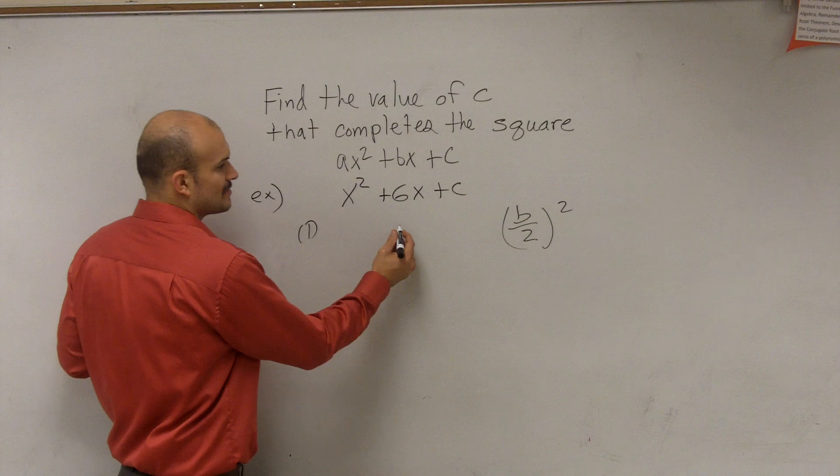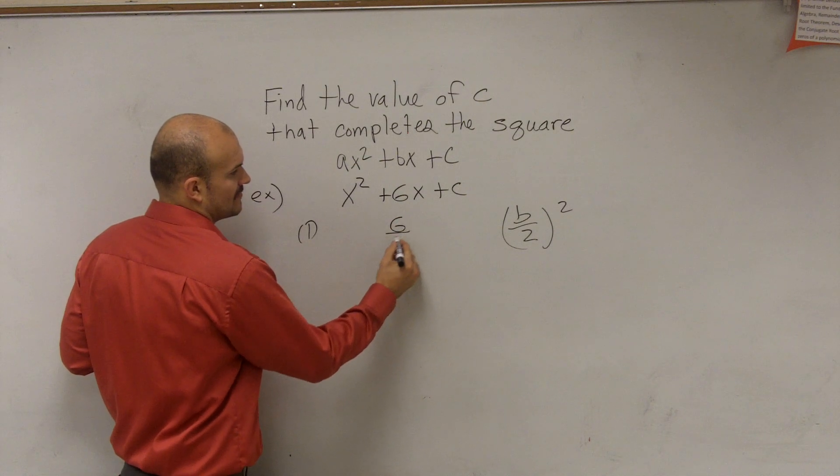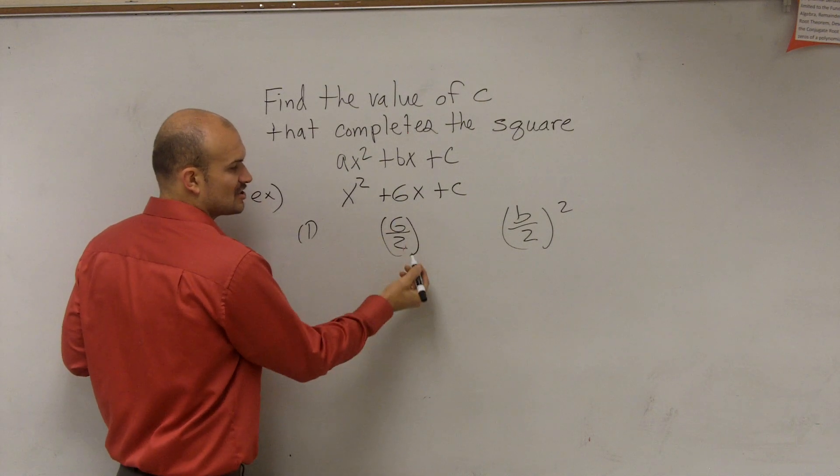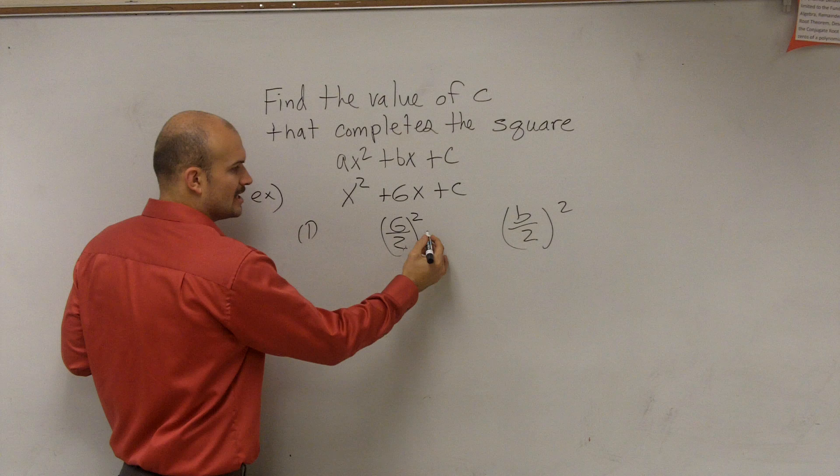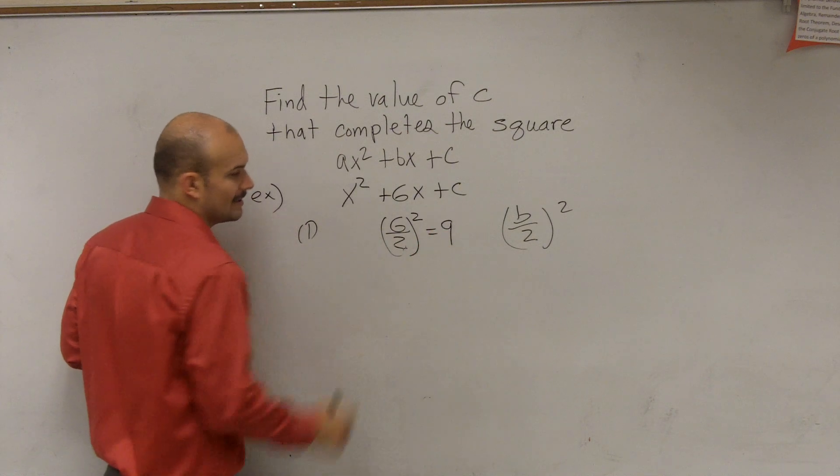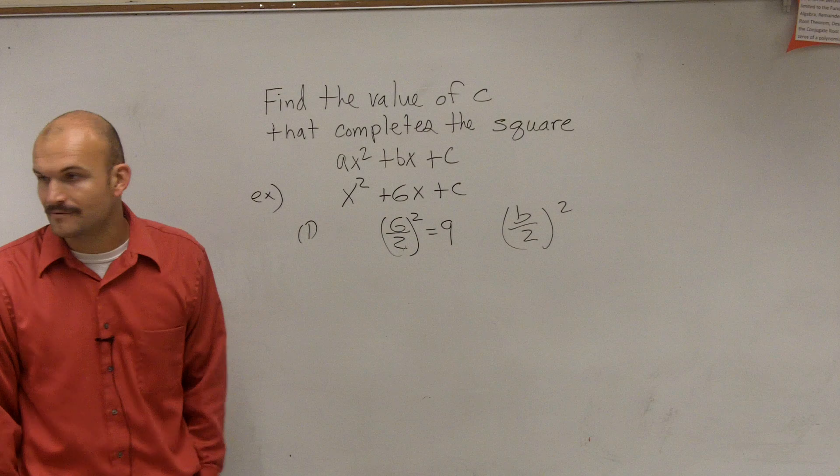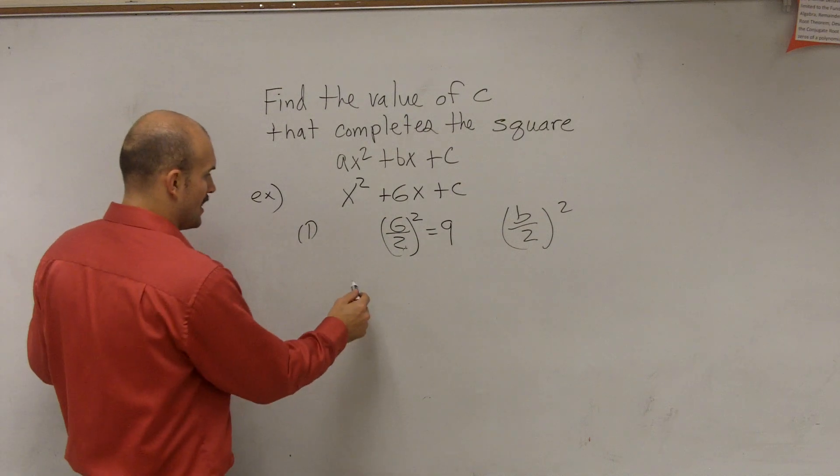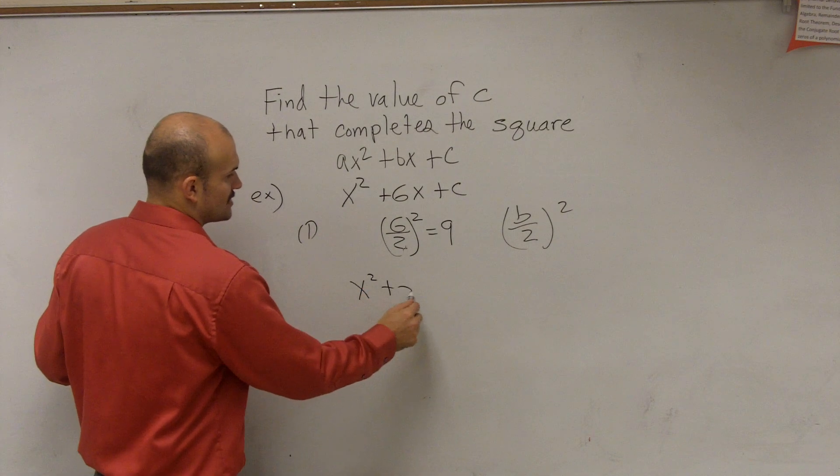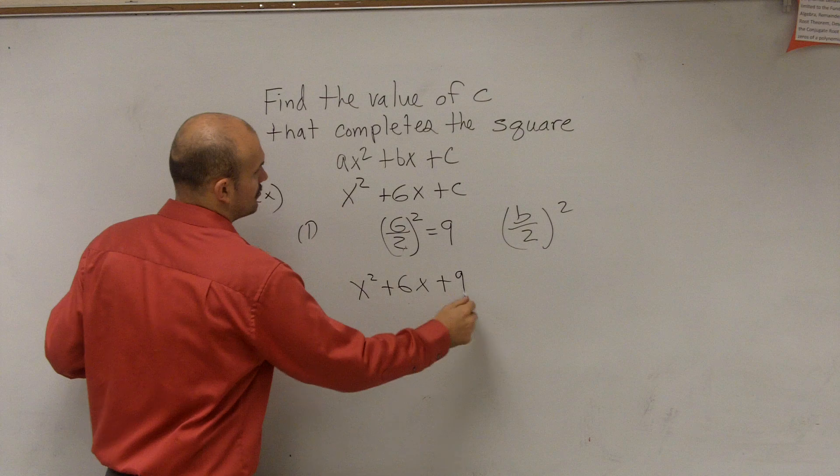So what I'm going to do is I'm going to take 6 divided by 2 and square it. That's going to give me 9, as 6 divided by 2 is 3, 3 squared is 9, right? So therefore, I have x² plus 6x plus 9.